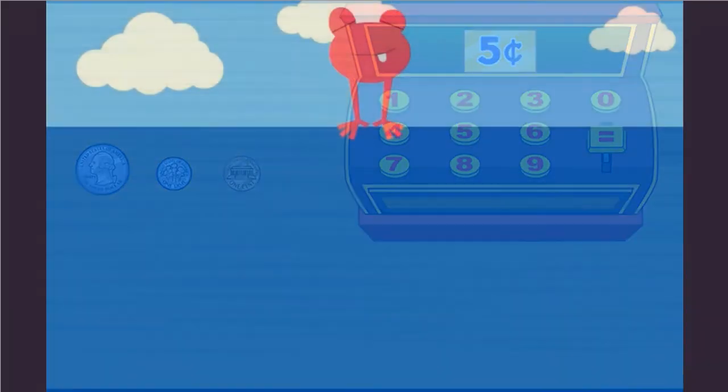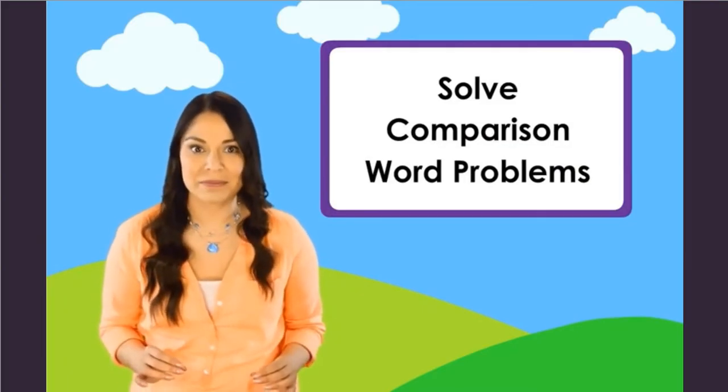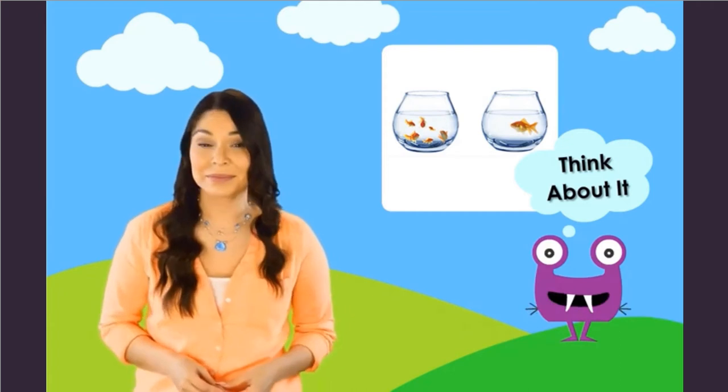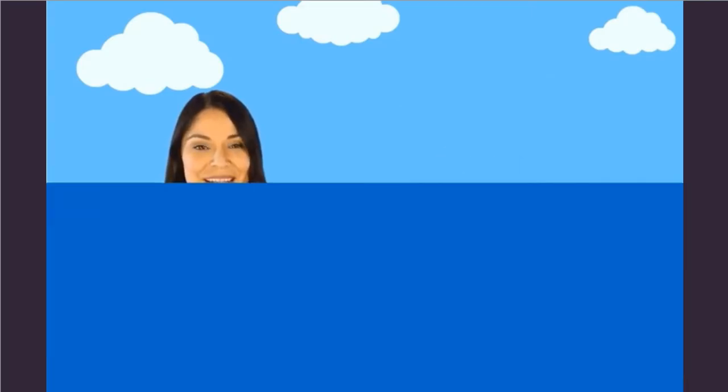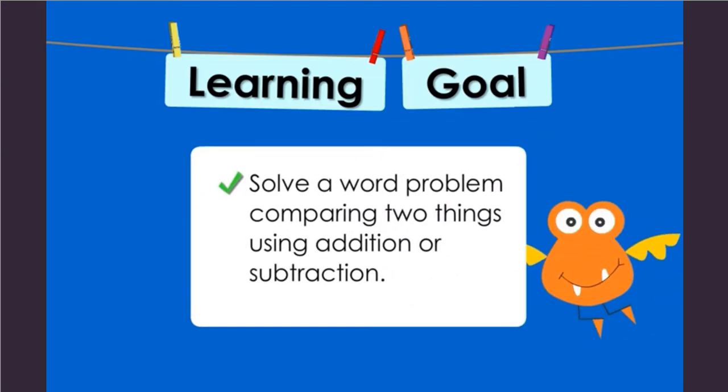Moving forward to the next lesson in our math video. Hi, how you doing? I'm Jeannie. Today we're going to learn how to solve comparison word problems. Have you ever looked at two things and wondered which is more or which is less? Noah and Ava have fish tanks. They each have a different number of fish. We're going to see who has more fish. Here's what we are going to learn about today. You will learn how to solve a word problem comparing two things using addition or subtraction. Okay, we're ready. Let's go. Click the button to move on.